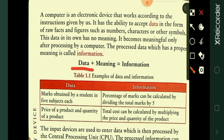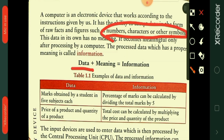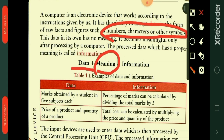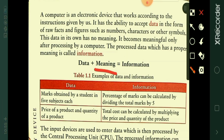The combination of data — which is numbers, characters, or other symbols that you enter — and the meaning it gets after processing is known as information. So the combination of data and meaning is known as information, and data gets its meaning only after processing.